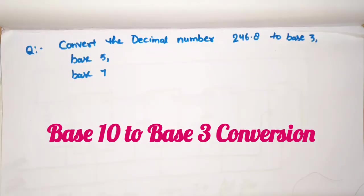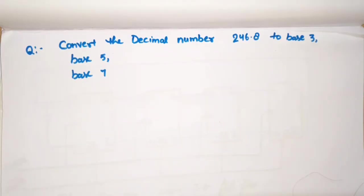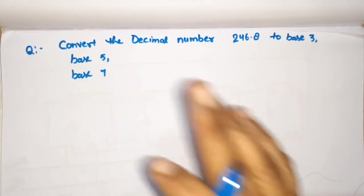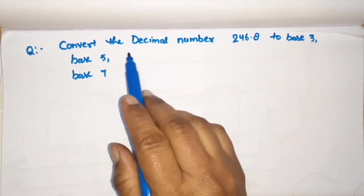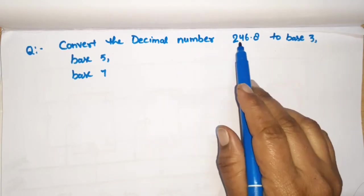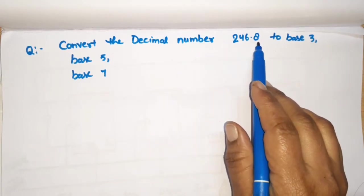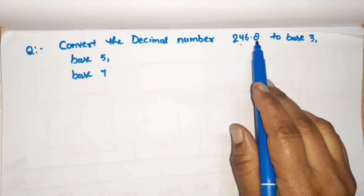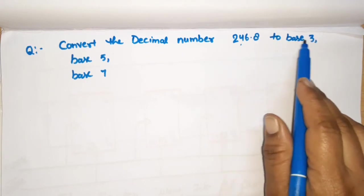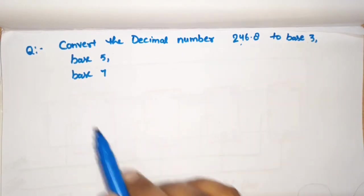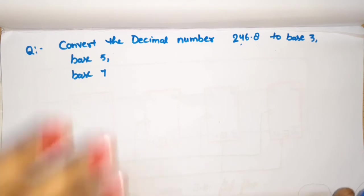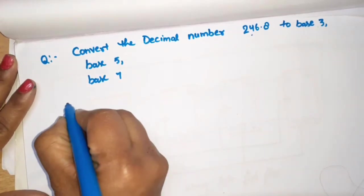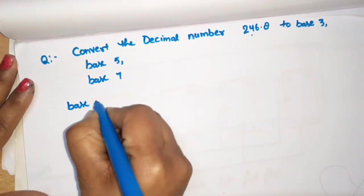Hello everyone, in this video I will discuss how we convert the base from decimal to any base. So I have taken an example: convert the decimal number 246.8, it has an integer and fraction part, to base 3, base 5, base 7. I will convert one by one. First, we start with base 3.